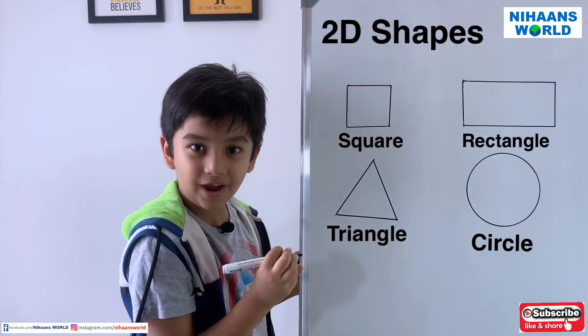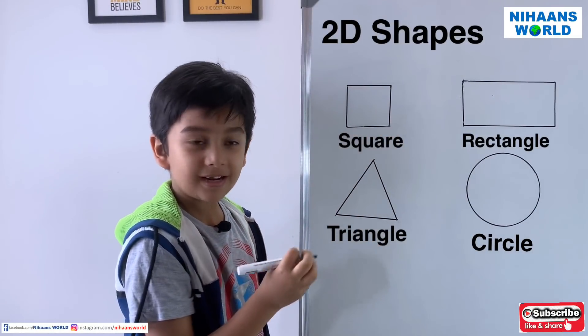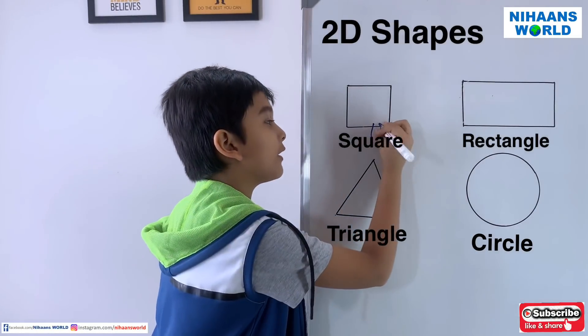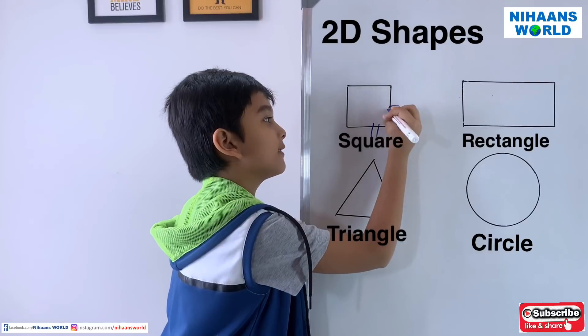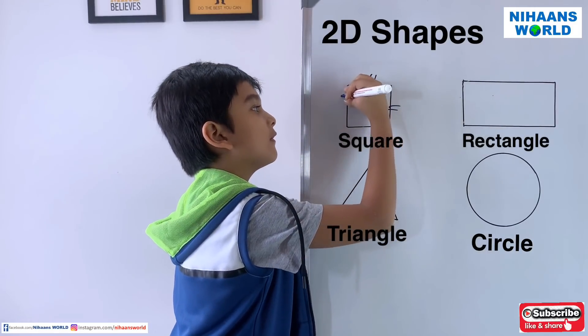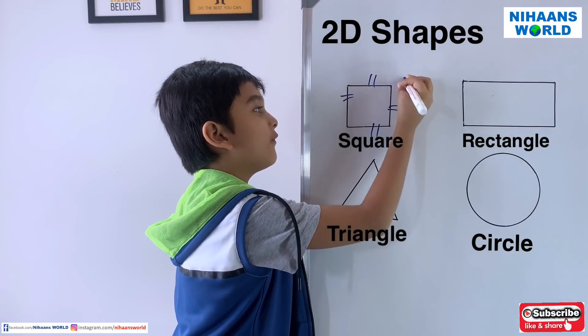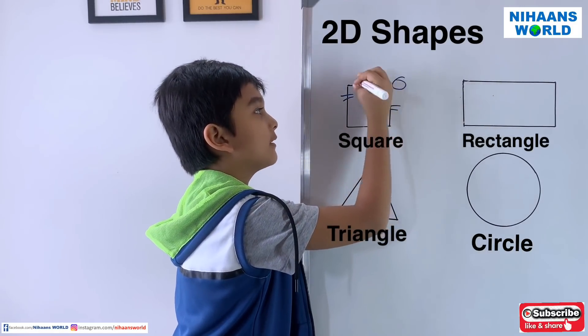This is a square. It has four equal sides and four vertices.